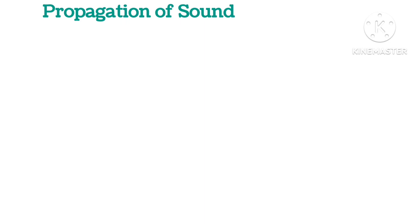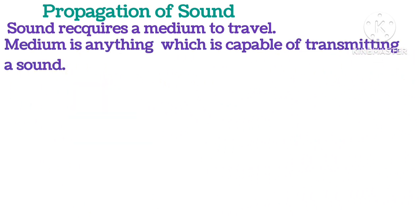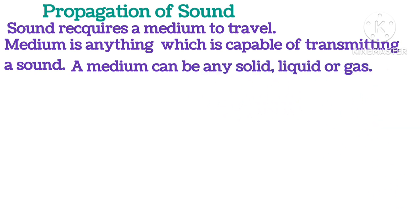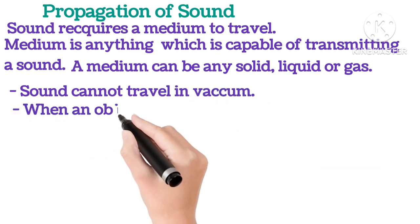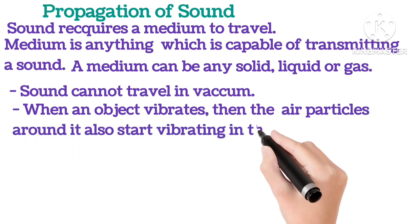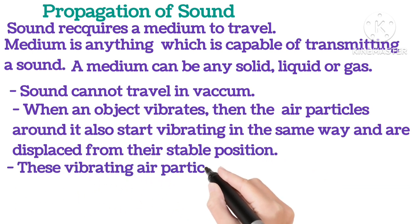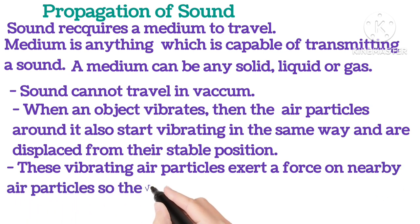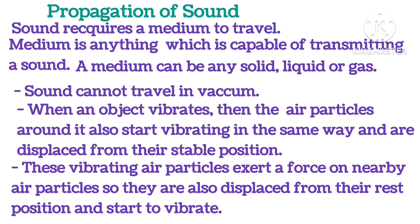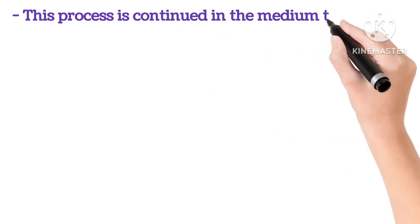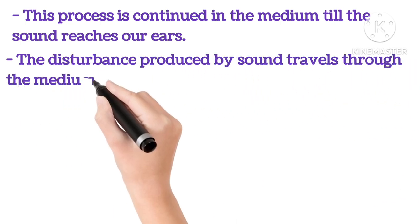Propagation of sound: Sound requires a medium to travel. A medium is anything which is capable of transmitting sound. A medium can be any solid, liquid or gas. Sound cannot travel in vacuum. When an object vibrates, the air particles around it also start vibrating in the same way and are displaced from their stable position. These vibrating air particles exert a force on nearby air particles, so they are also displaced from their rest position and start to vibrate. This process continues in the medium until the sound reaches our ear. The disturbance produced by the sound travels through the medium.